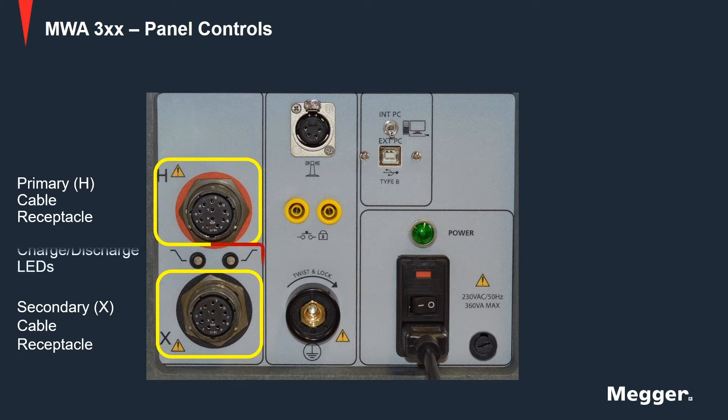Further, you have the discharge LED to the left that flashes after a test to indicate stored energy in the winding is being dissipated. The charge LED to the right flashes at the beginning of the test to indicate the winding is being energized.